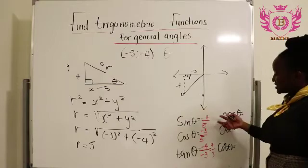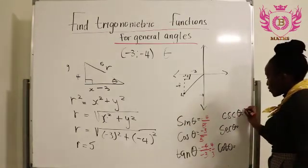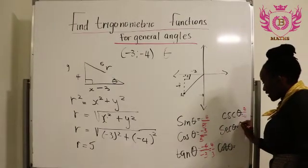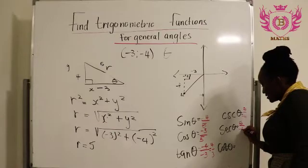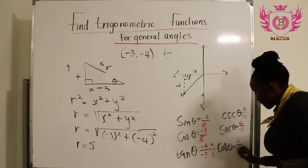Now the cosec is the flip of sine. Okay so here we'll have 5 divided by -4. We just flip this one: -5/3. And this one: 3 divided by 4.